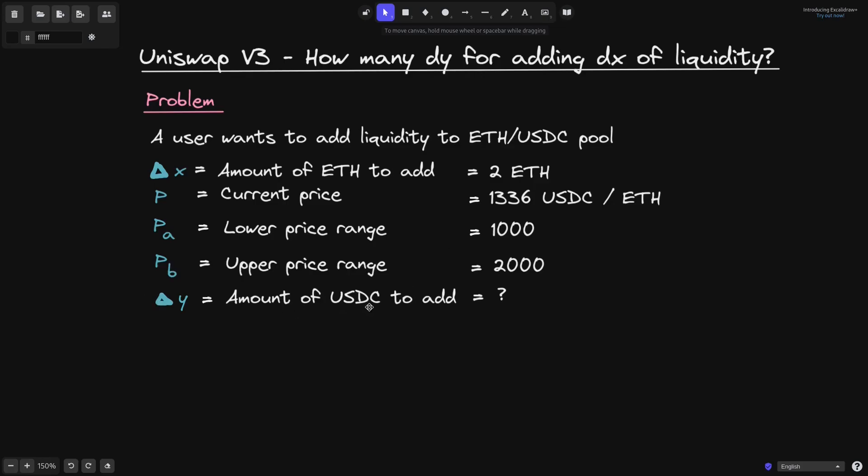Delta Y will be the amount of USDC that we'll need to add. And our question is, how much USDC will we need to add? With these parameters delta X, P, P_A, and P_B, our question is what is delta Y?